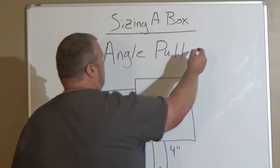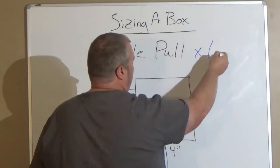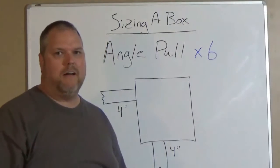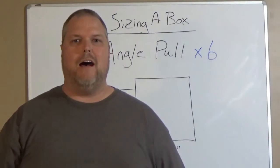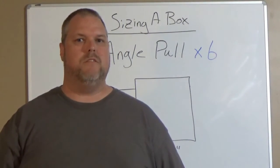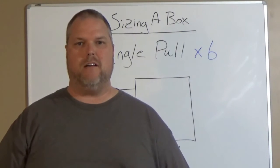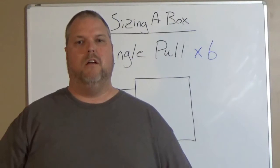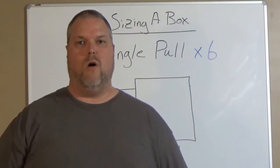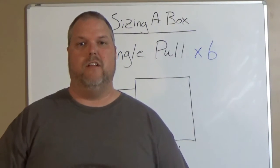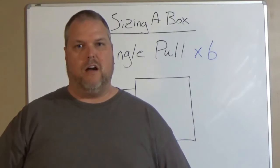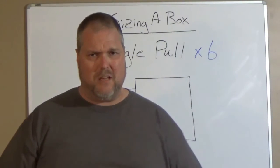So we will multiply a pull box or an angle pull box that will be sized 6 times the largest conduit. Sizing the junction box to the conduit. How we size the conduit to the wires will be done in a later video. So please keep a look out for that one. Let's get back to this.